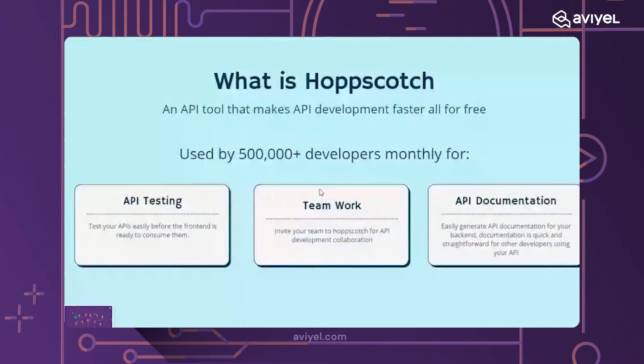Hoppscotch is really amazing and it allows you to run your API tests on their platform. API testing means that you want to easily test your API before you send it to the front end to consume — meaning before the front end developers use your API, you want to ensure that it works well.